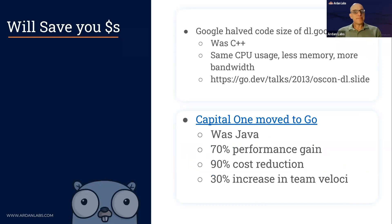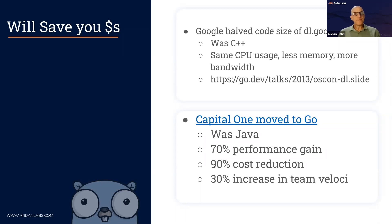Another reason, which is always a good reason, is money. One of the first projects Google started with Go was converting dl.google.com — the site where you get patches for Android and Chrome, which sees a lot of traffic. It was a large C++ application. They converted it to Go, reduced the code size by half, which has huge implications for maintainability, cost, and bugs. They achieved the same CPU usage, less memory usage, and actually more bandwidth. There's a link to the talk by Brad Fitzpatrick, who was on the Go team at Google at the time — it's from 2013, but it's still a really interesting case study.